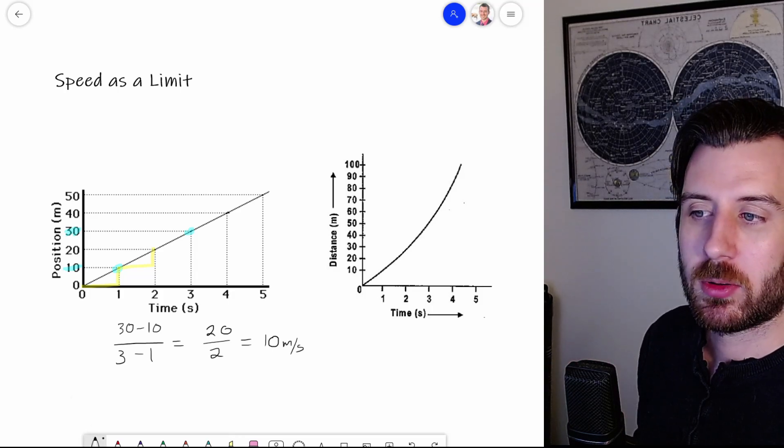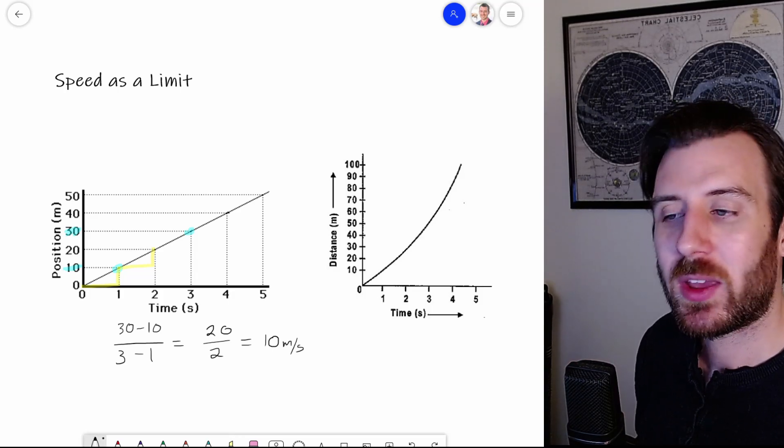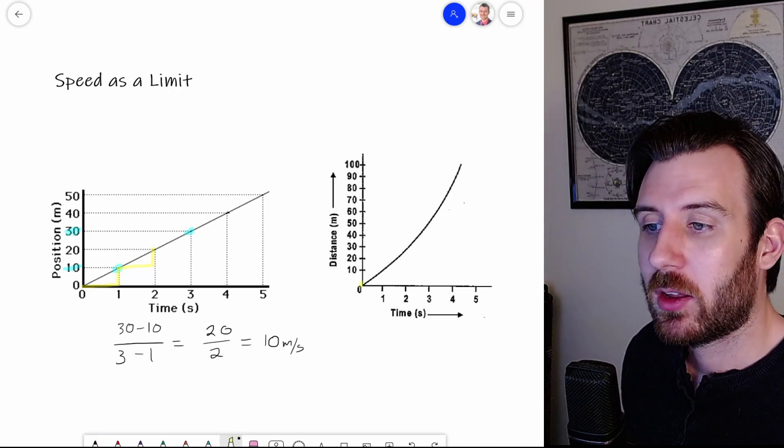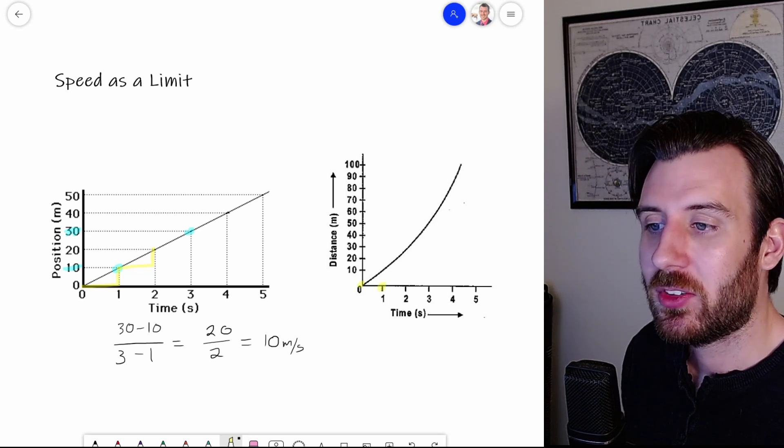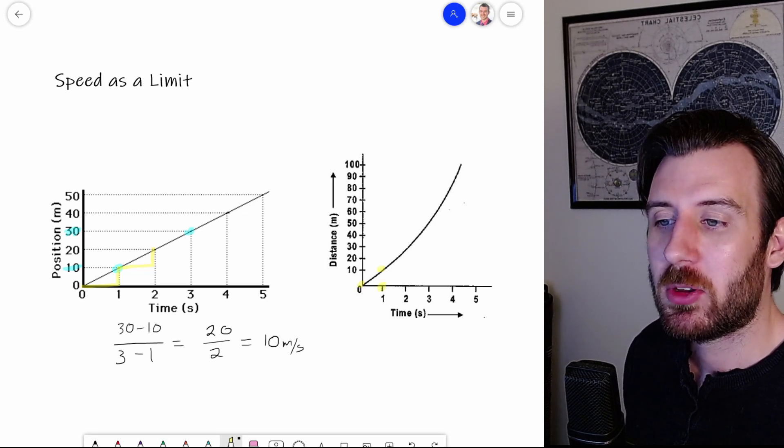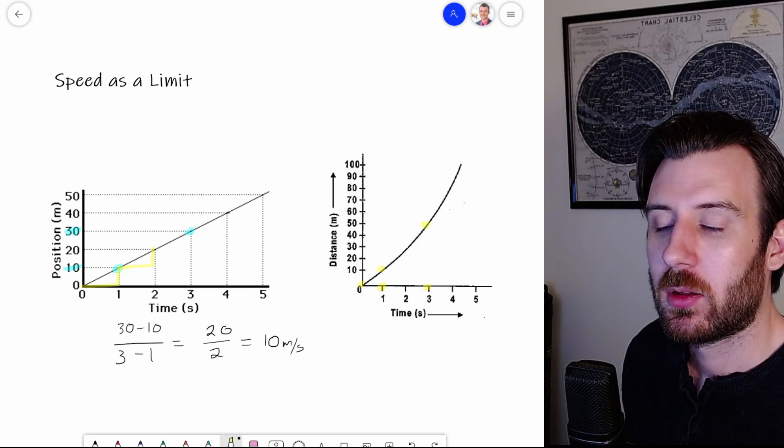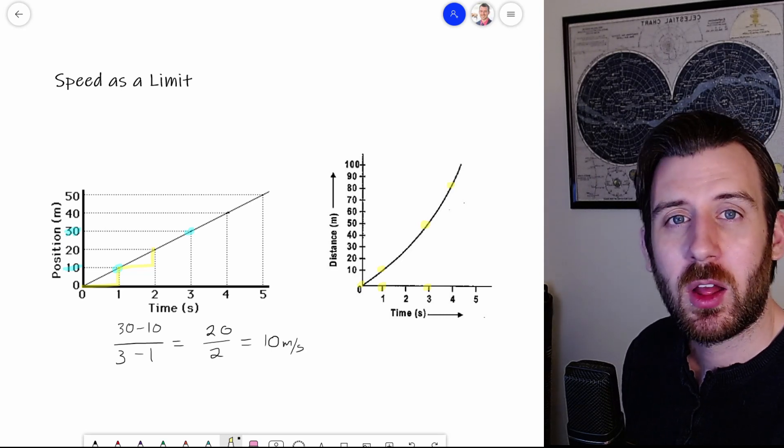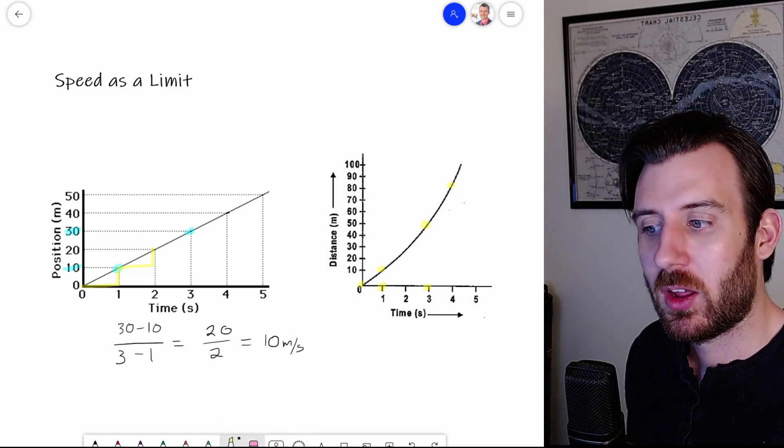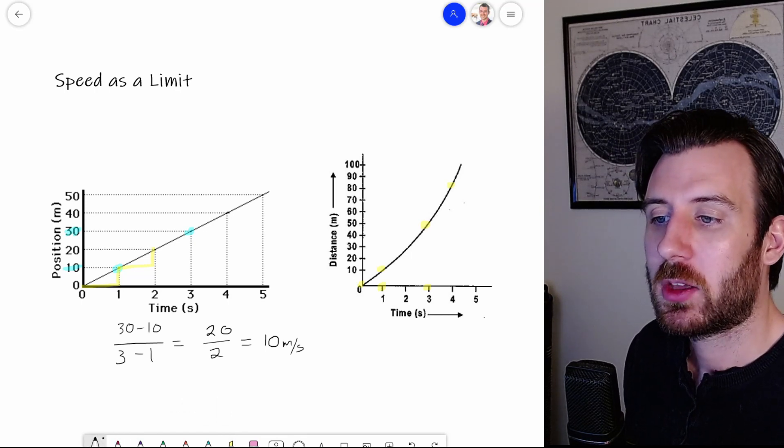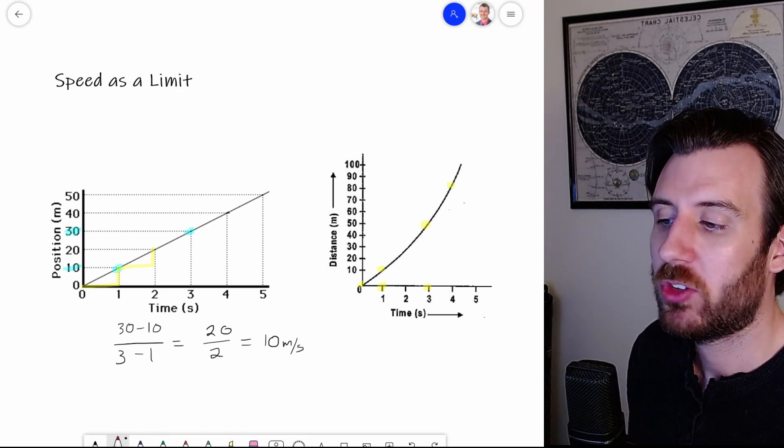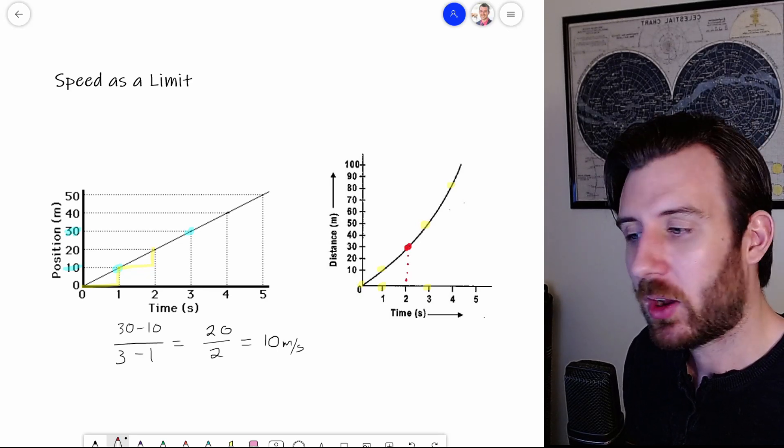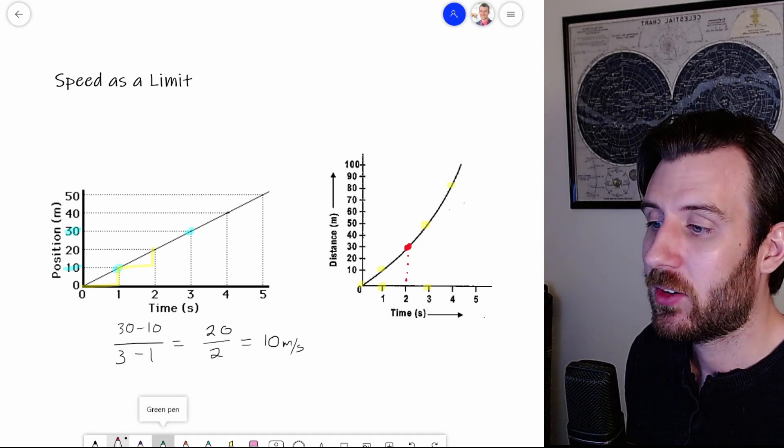And we can see this again in the graph, because what we're doing is every single time, simply going over one second and up 10 meters. So the idea of speed is nothing more than the slope of this line. Now let's compare that to the second graph. In the second graph, we have something that is accelerating. And I can see this because between the zero and one second mark, we can see that it went up about 10 meters. But between the three second mark and the four second mark, it looks like it's gone something more like 30 meters. So it's speeding up. Now the question becomes, how fast is it going at the two second mark?